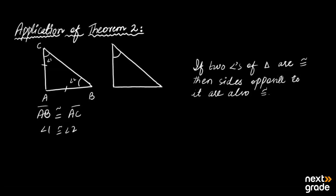Conversely, if angle 1 and angle 2 are congruent — that is, if angle C and angle B are congruent — then the side opposite to C is AB, and the side opposite to B is AC, and both of those sides are congruent.